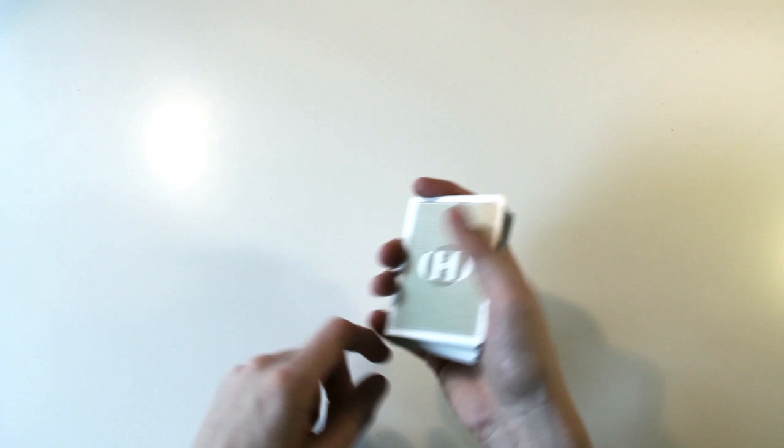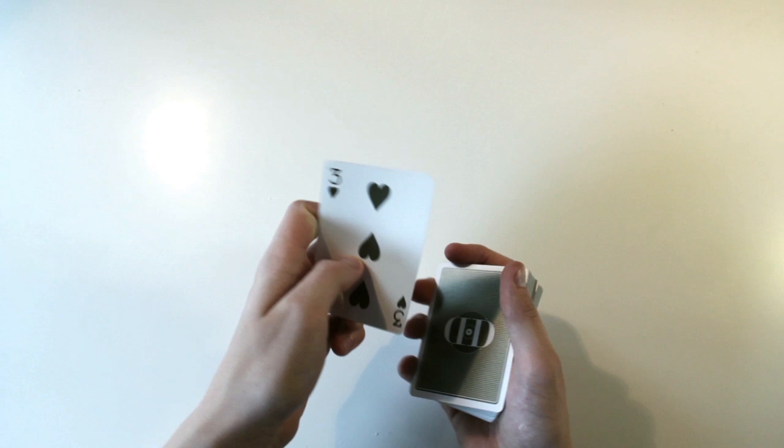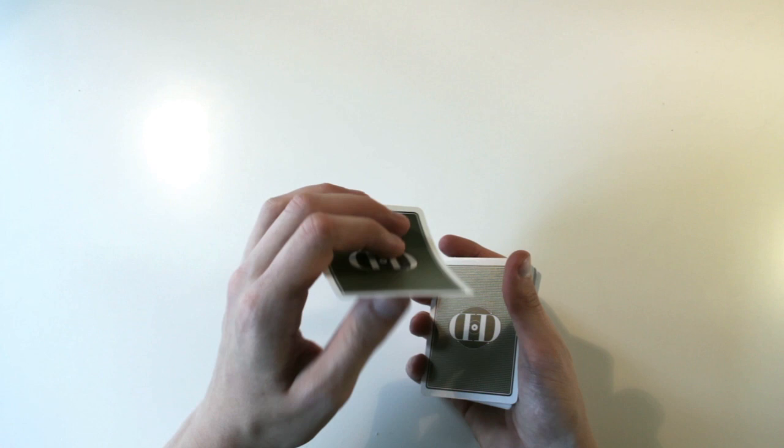It's a great double lift and that's everything I had to talk about. You just get a pinky brake below two cards, then you just take it like this with both of your fingers, and your thumb just slides down and then you bend the card a little bit. That's the only thing you need to know.